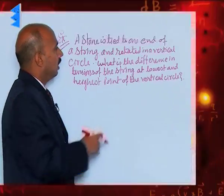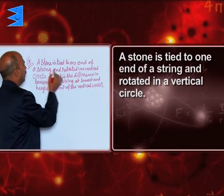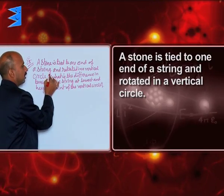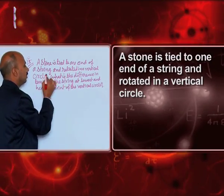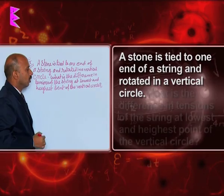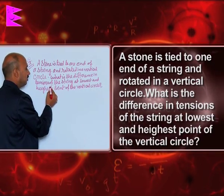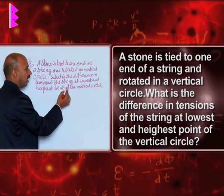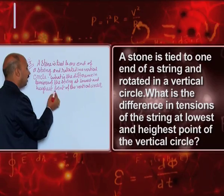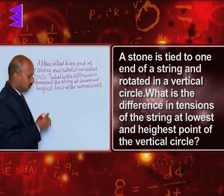See here — a stone is tied to one end of a string and rotated in a vertical circle. What is the difference in tensions of the string at the lowest and highest point of the vertical circle?